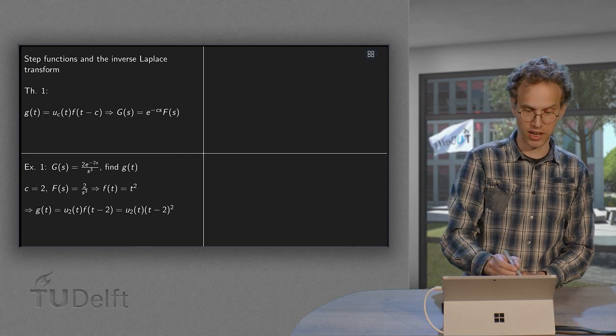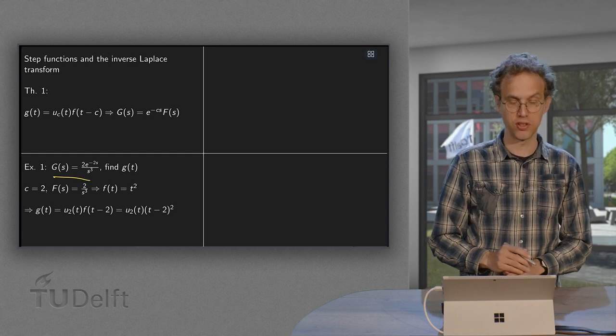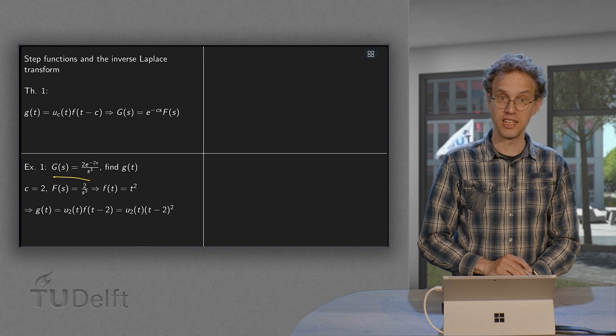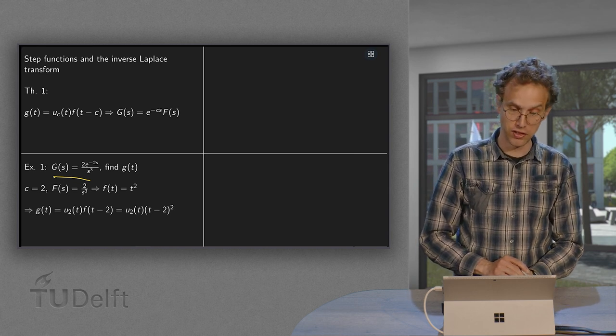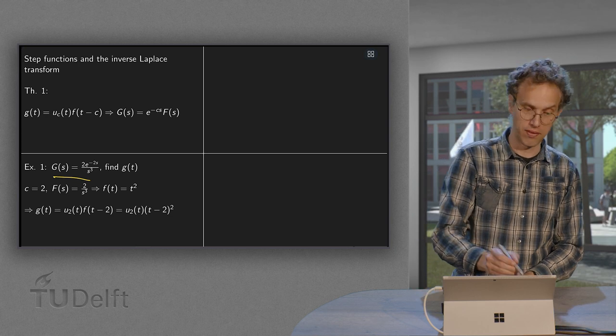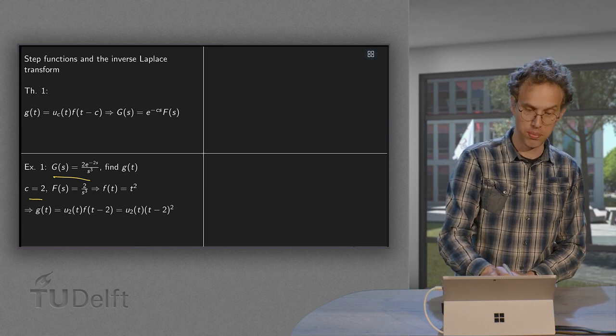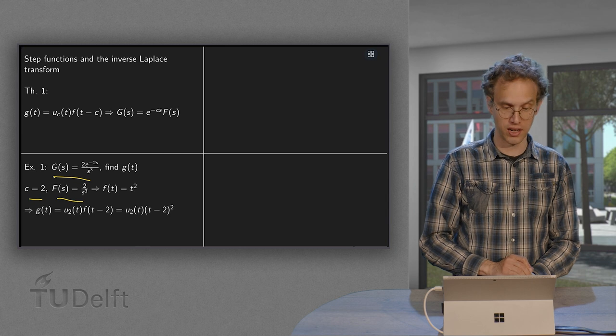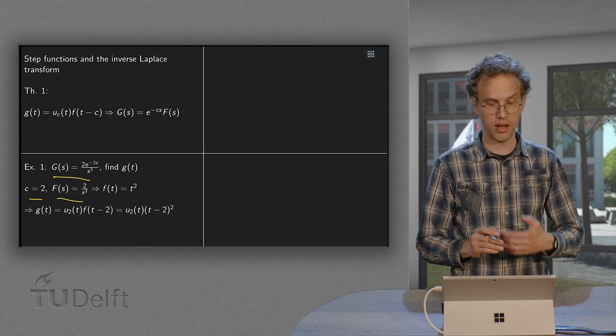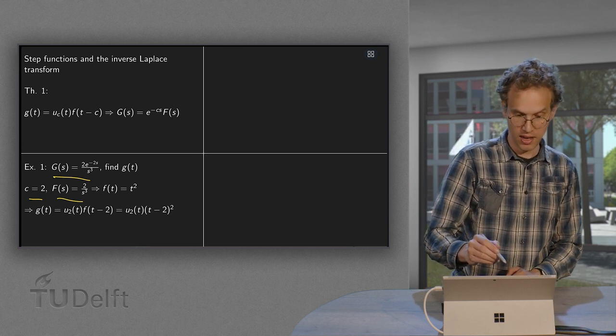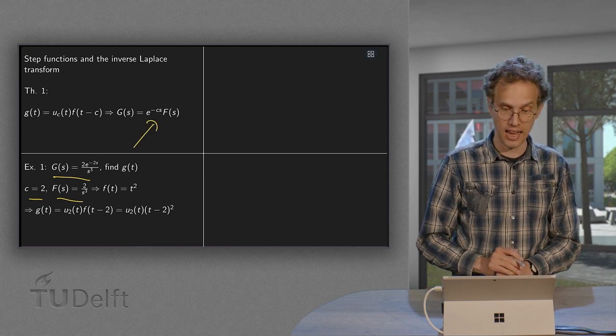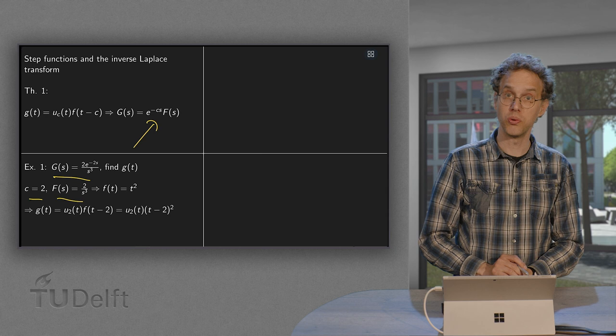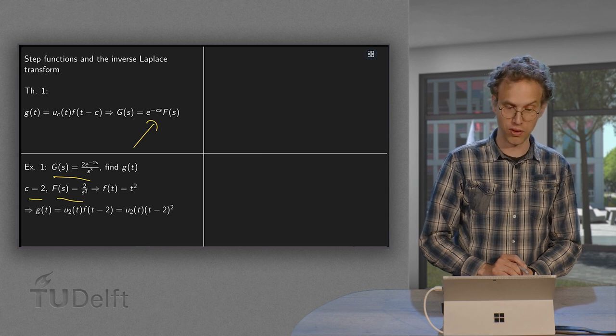So suppose we have the following example: capital G of S equals 2 times e to the power minus 2S divided by s cubed. Find G of t. Well, we have C equals 2, capital F equals 2 over s cubed, because then we are exactly of this form with C equals 2 and capital F of S equals 2 over s cubed.